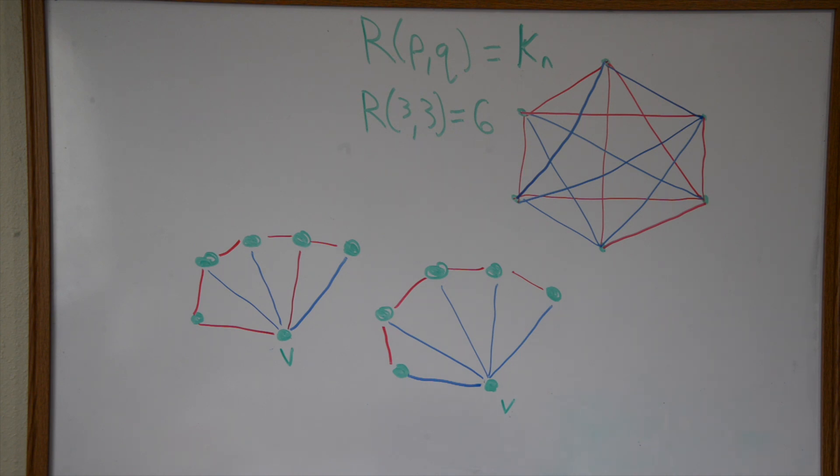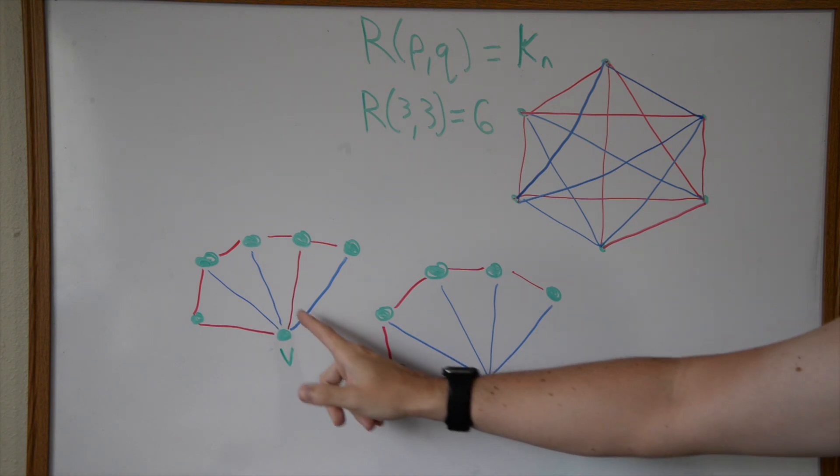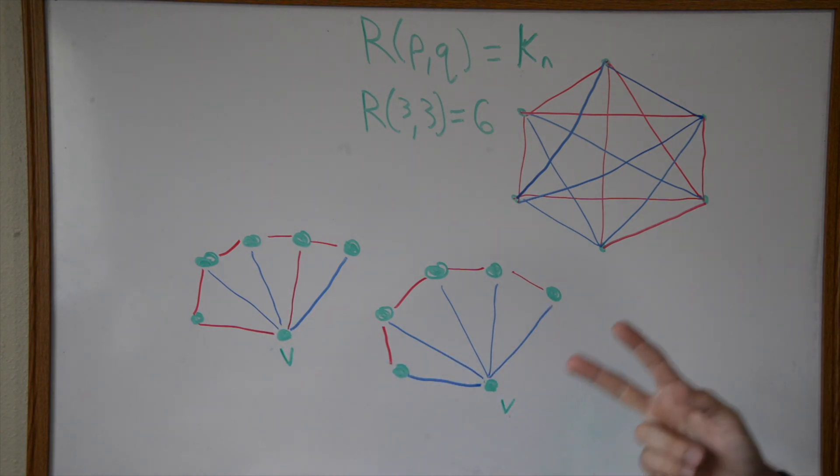We only have two colors to choose from, which means via the pigeonhole principle every vertex must either be all the same color, whether that's red or blue, or it has to have three of one color and two of the other, just because we have two options and five iterations of that option.